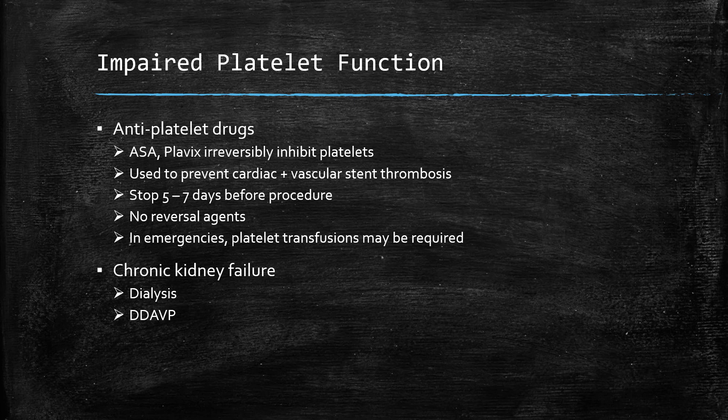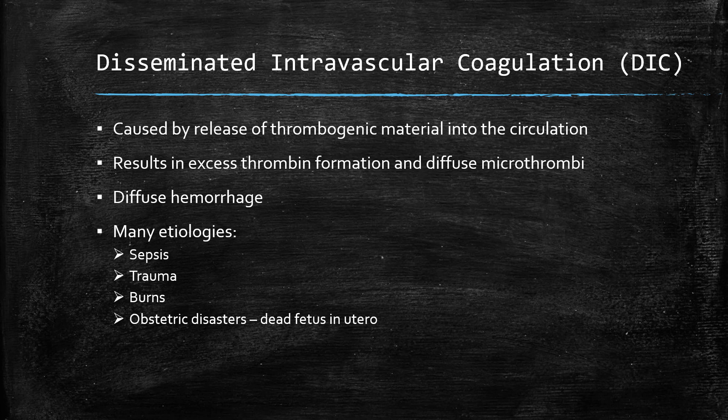Patients with chronic kidney failure also have impaired platelet function. The best strategy is to schedule a case the day after dialysis if at all possible. DDAVP also works well in this patient population to minimize bleeding. Disseminated intravascular coagulation, or DIC, is a dramatic and highly lethal condition caused by the release of thrombogenic material into the circulation. Clinically the picture is one of diffuse hemorrhage, but pathologically the disease is characterized by diffuse microthrombi. In general surgery, sepsis, trauma, and burns would make up the majority of cases; on the obstetric unit, a dead fetus in utero can cause this condition as well.